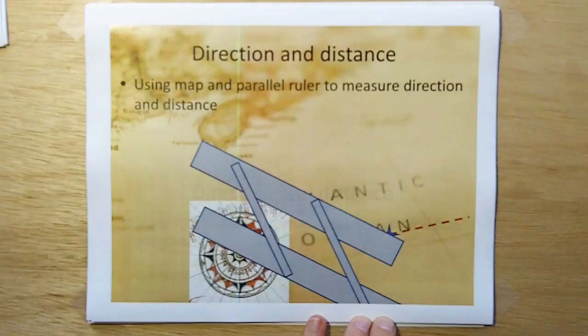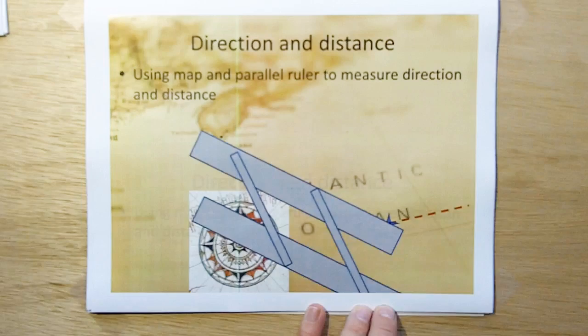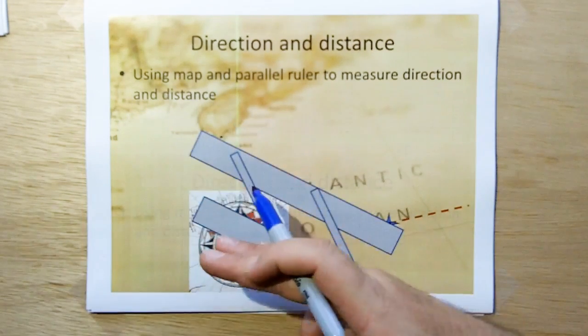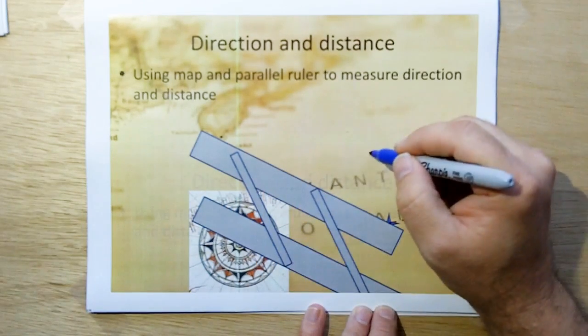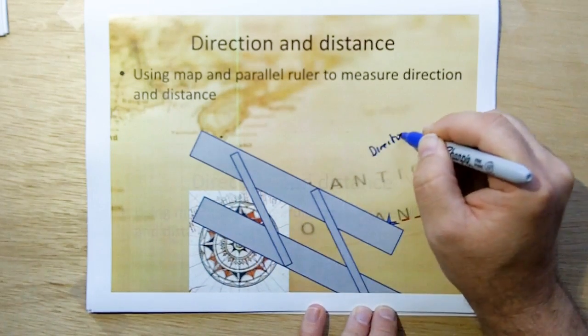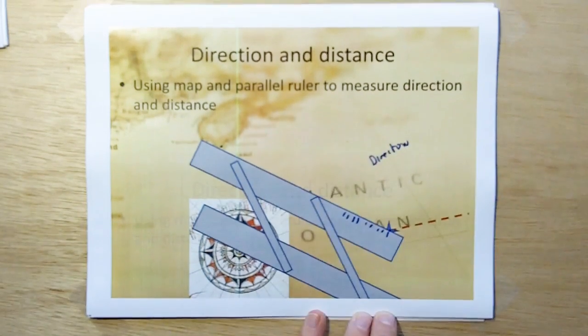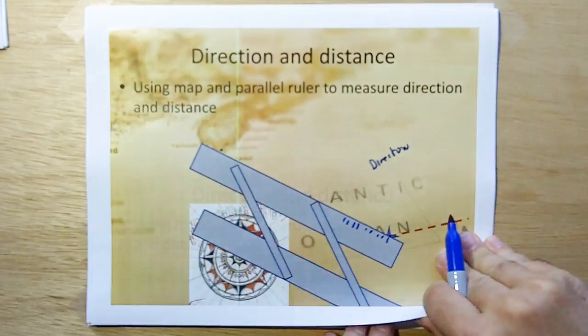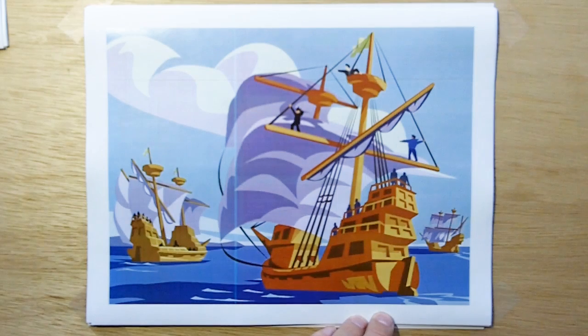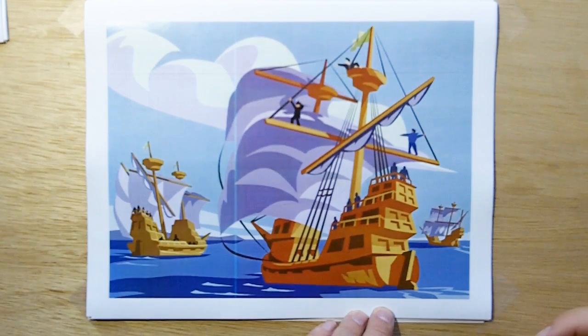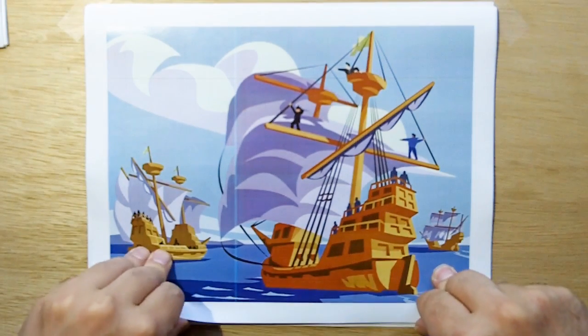What you do is you take your parallel ruler, and you put it where your ship's location is, and you put the other edge where the port is that you want to sail into. Then you slide out the other part until it goes over the center of the wind rose. From the wind rose, you can read the direction that you need to travel. And then from the gradients on the edge of the ruler, you can figure out the distance you need to travel to get to port. Now what you would then do is call it up to the captain. You'd say, Captain, we need to take a heading of so many degrees and a distance of so many nautical miles. And the captain says, fine. But how does the captain do that?